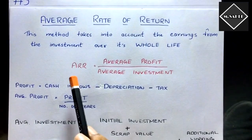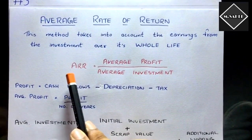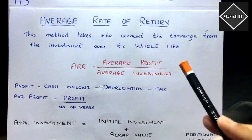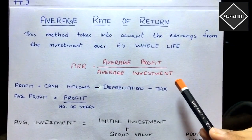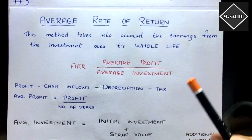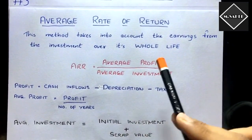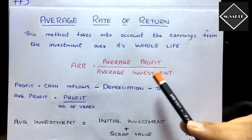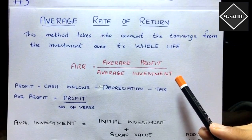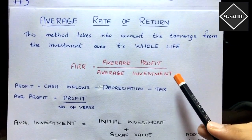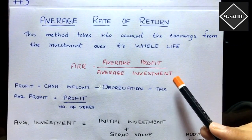The formula of this technique is: ARR = Average Profit divided by Average Investment. That is the formula. We need to know how to calculate average profit and how to calculate average investment.